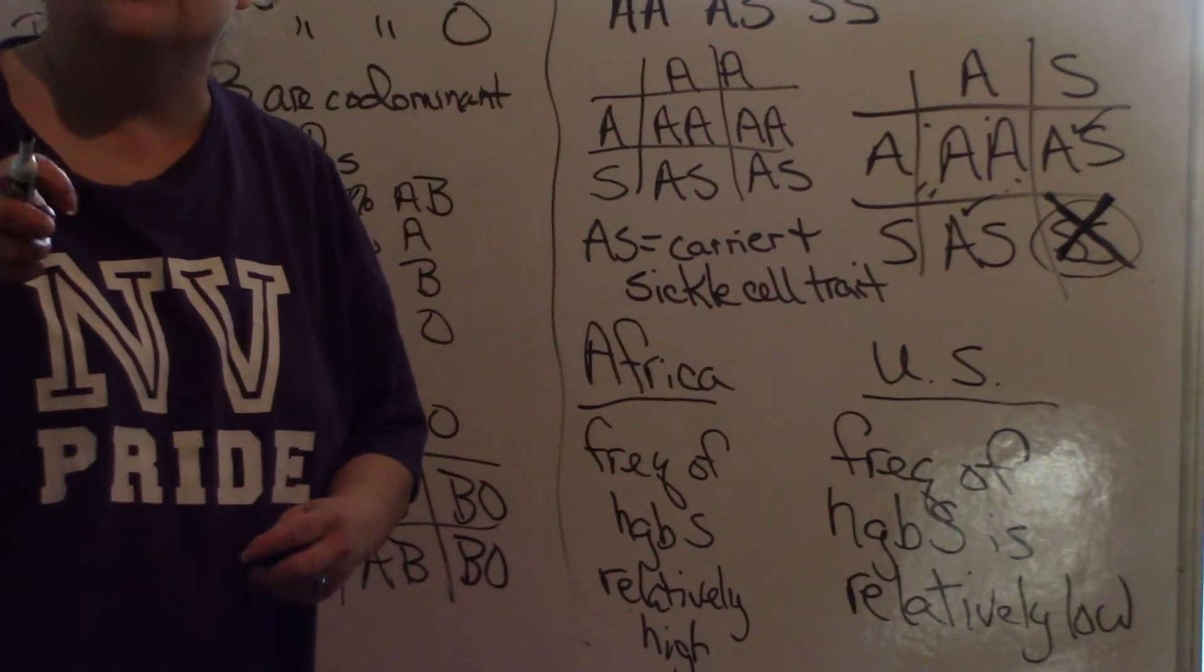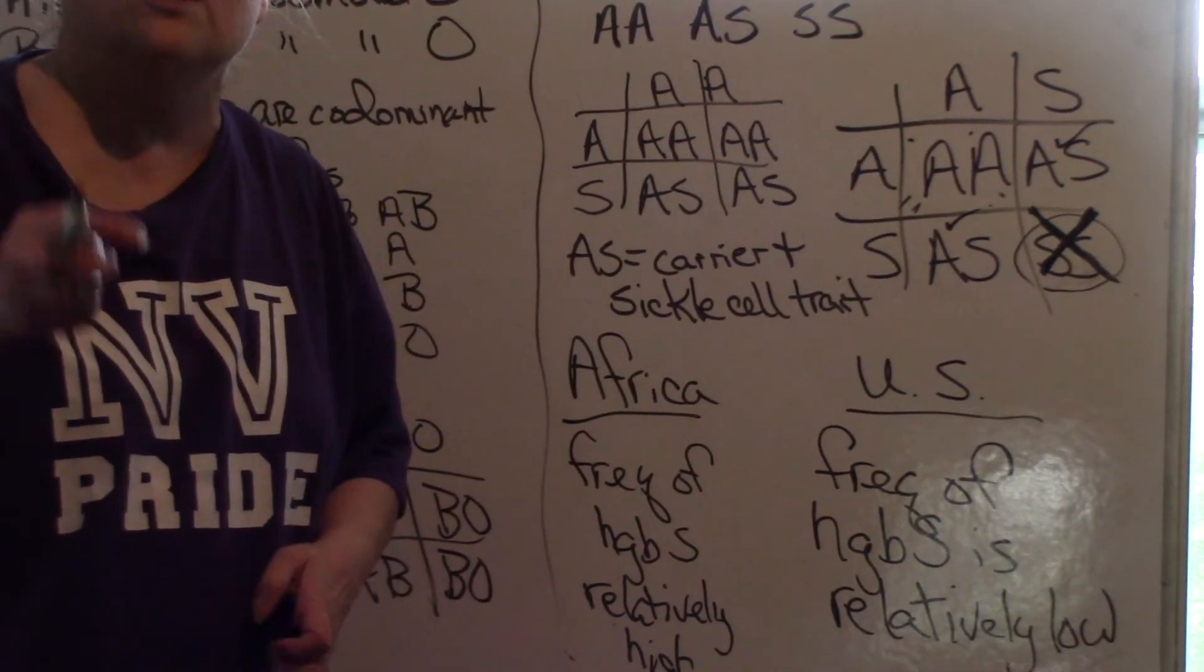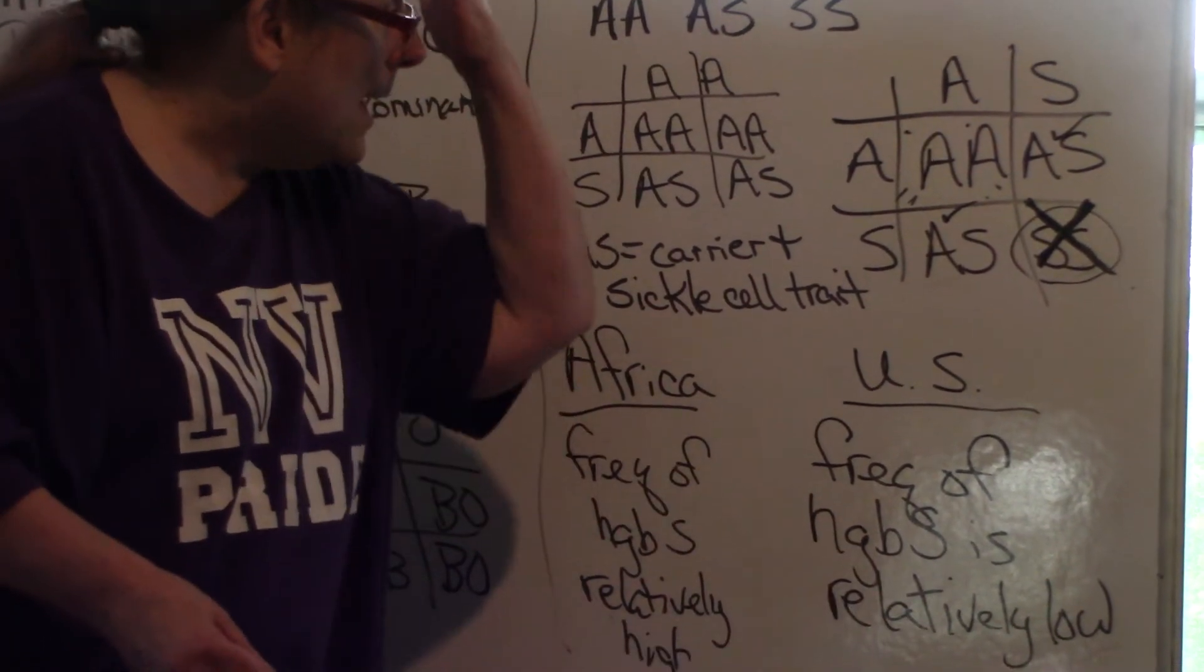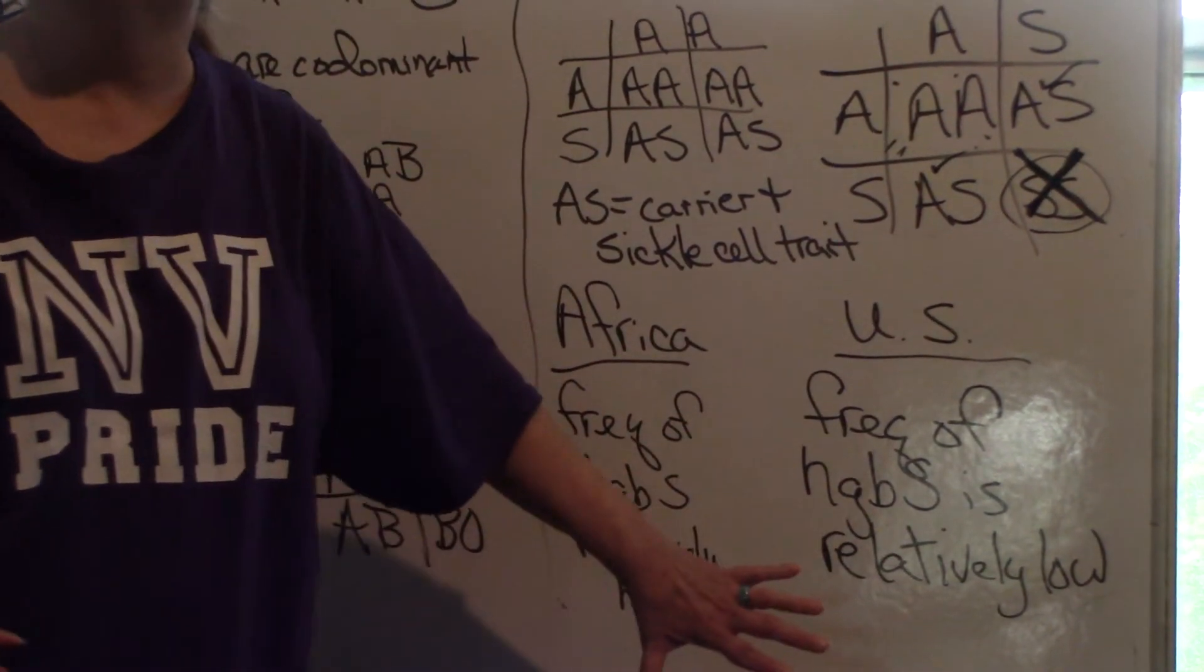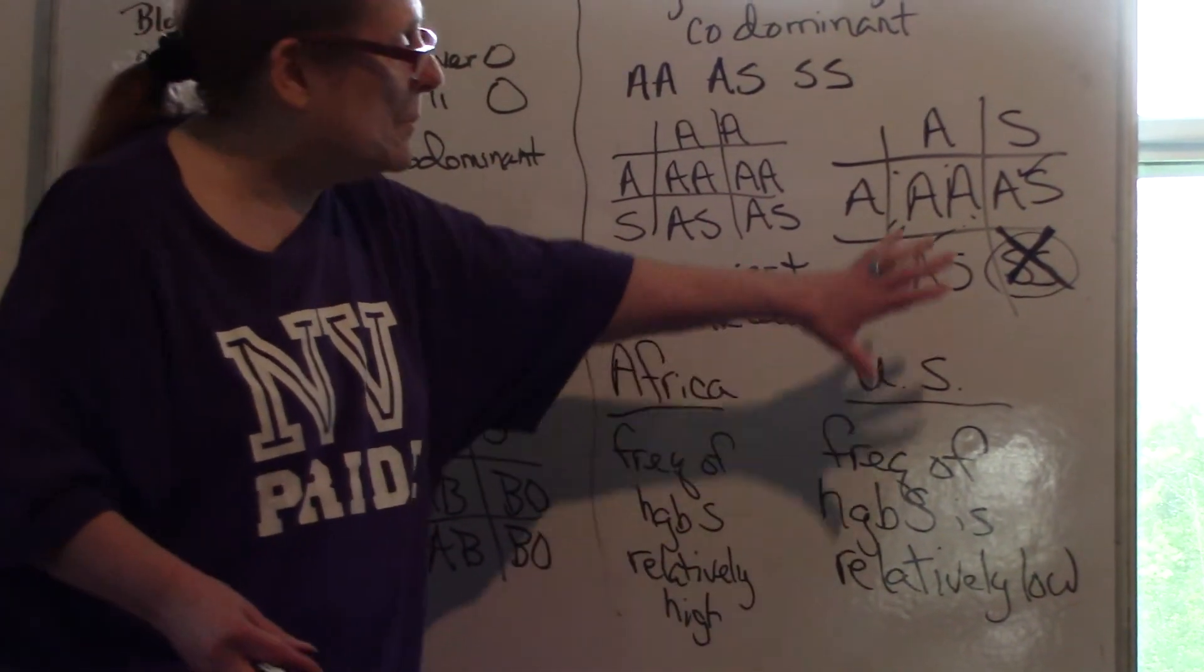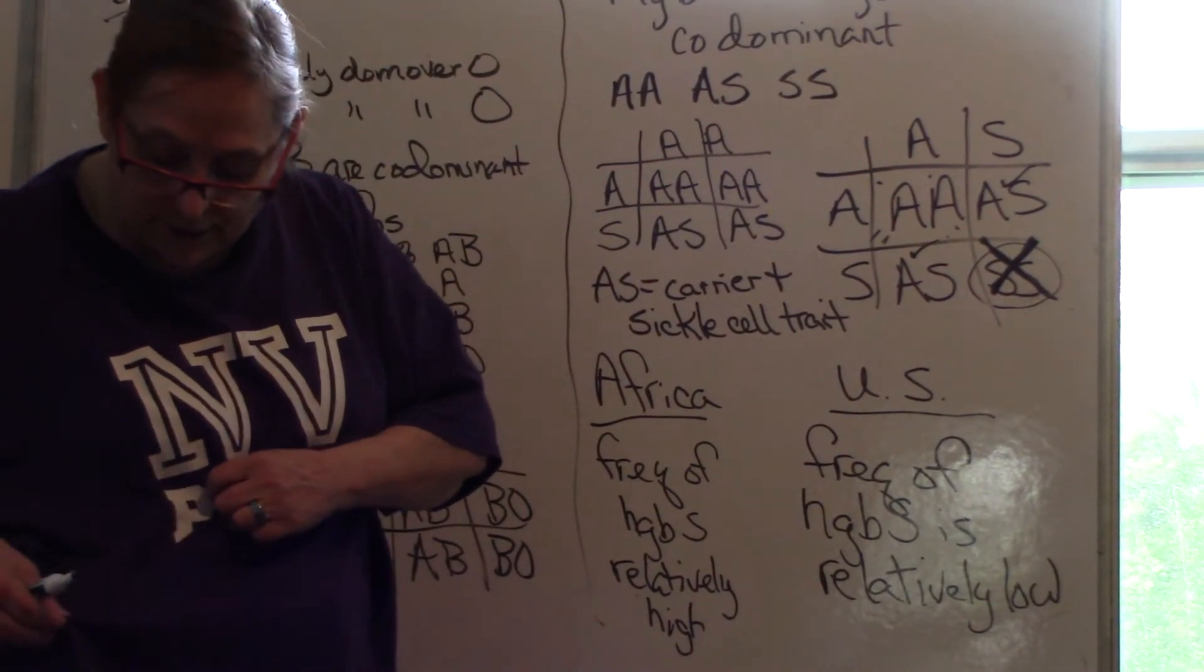So we have seen what is called a change in allele frequencies in a population over time, in this population compared to this population. And that is evolution. That's microevolution. We don't have a new species of people, but we have microevolution where allele frequencies have changed.